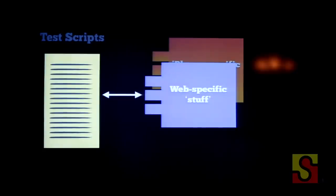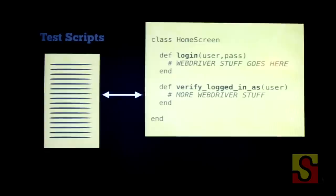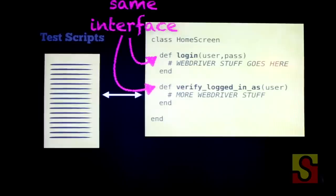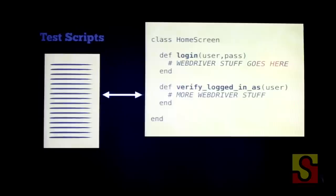What's to stop you replacing your iPhone page objects with web page objects? Here I have the equivalent page object that I was showing for a Frank test, but this is for a WebDriver test. Notice this is the exact same interface — my testing scripts can drive this page object exactly the same way as they drive my Frank page object, and they don't even know that they're driving a web UI rather than an iPhone UI. And this is the key concept. There's WebDriver gunk inside these page objects, just like there's iOS gunk inside the iOS page objects, but the key thing is it's insulated from your high level test scripts.